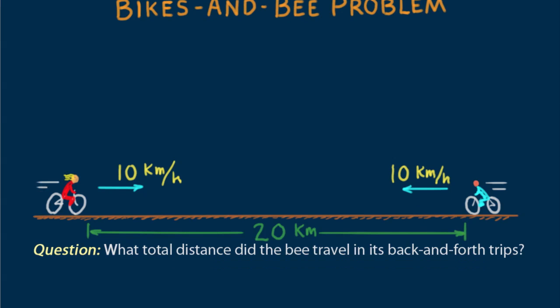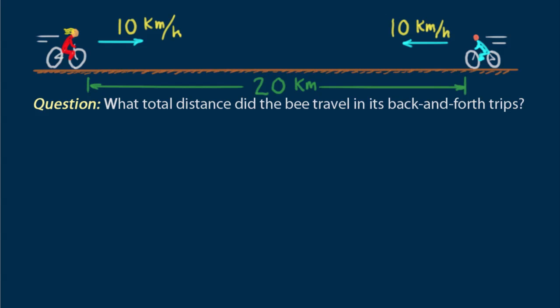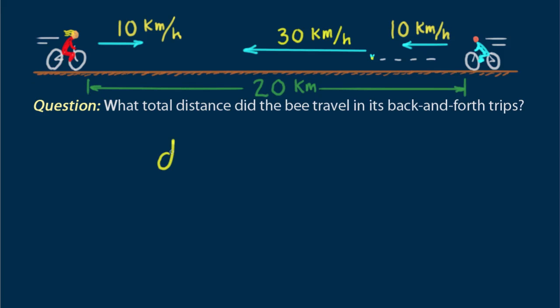More specifically, the total distance the bee travels. Then you start your solution with D equals.